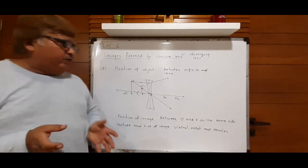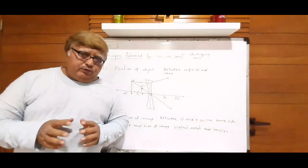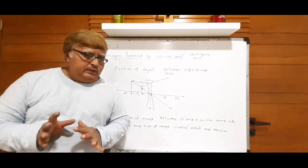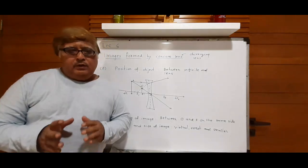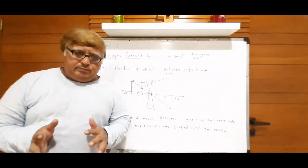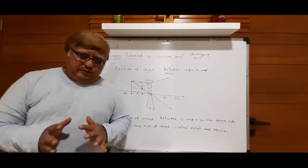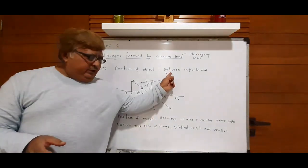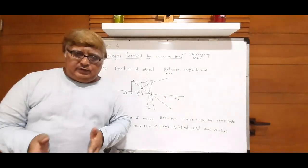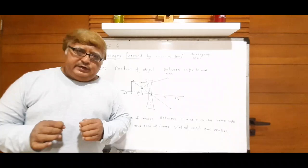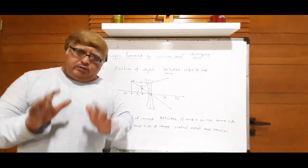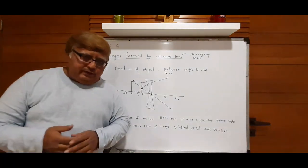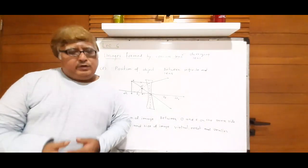Today's lecture is complete — we have drawn four images of convex lens and two images of concave lens. Homework: all ray diagrams done today must be drawn again, neat and clean, with all data written — position of object, position of image, nature and size of image. That means all six lens diagrams: four of convex and two of concave. Please send it to the associate. Thank you very much.